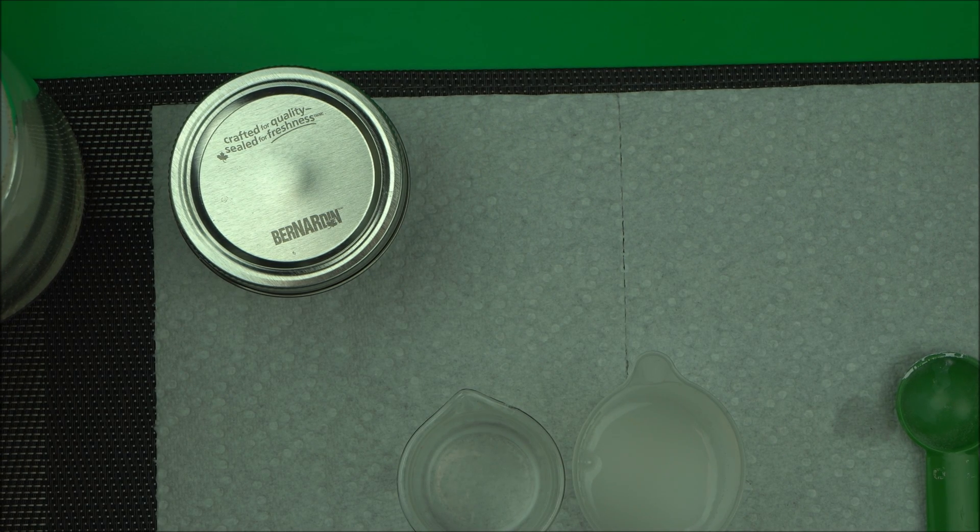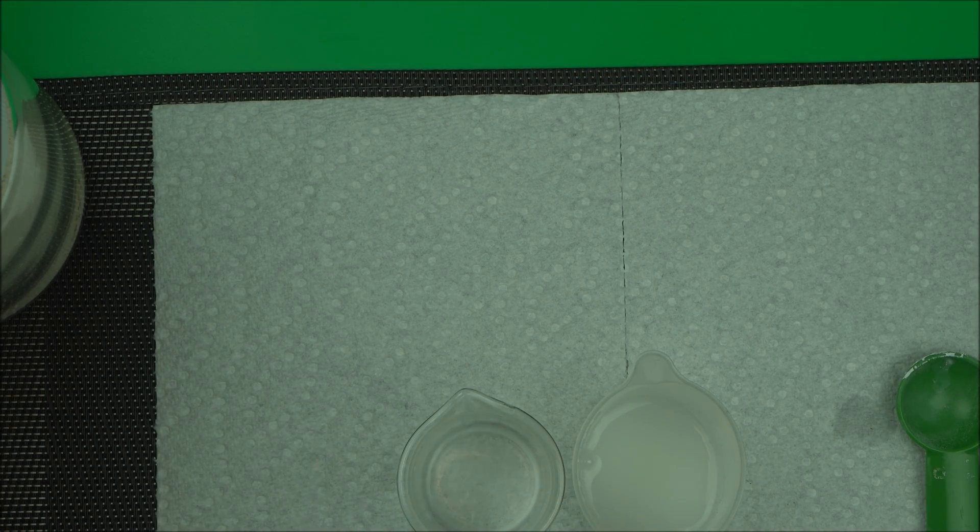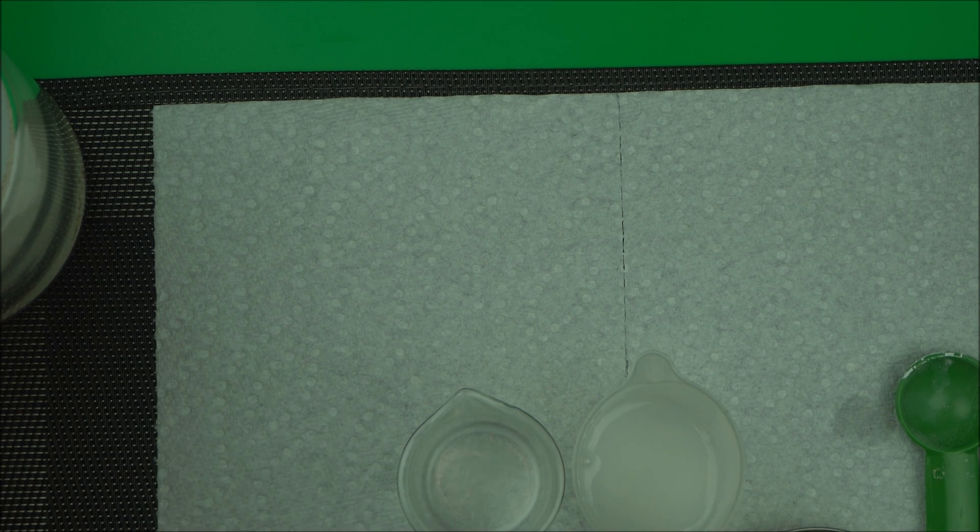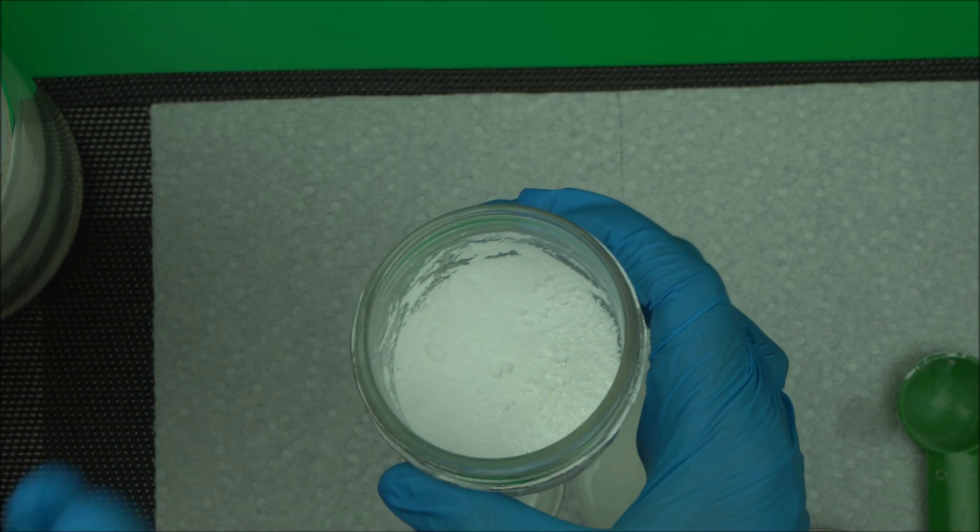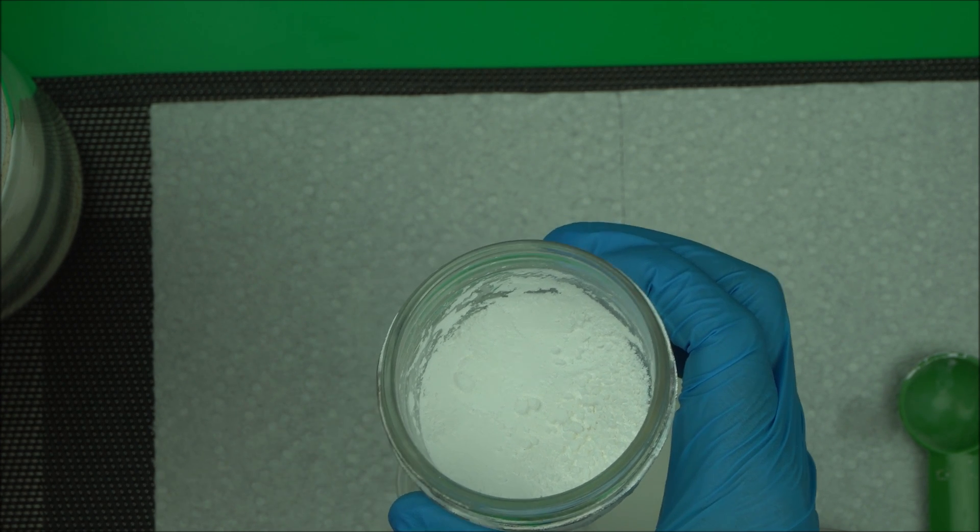So that's about it for allantoin. I hope this has answered some of your questions. If you're worried about crystallization, make sure you use it in the cool down phase. Add a little bit of water to it and add it to the cool down phase of your formulation.